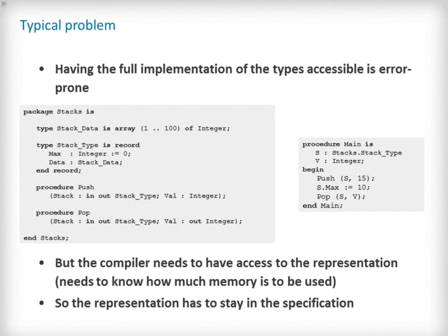A typical problem in programming is how much information to provide to a user of an existing package or module. The package developer needs to present a consistent API to their users and minimize the amount of variable information. Type declarations are such an area where caution is needed. Having the full implementation of the types accessible to the API user is error prone.